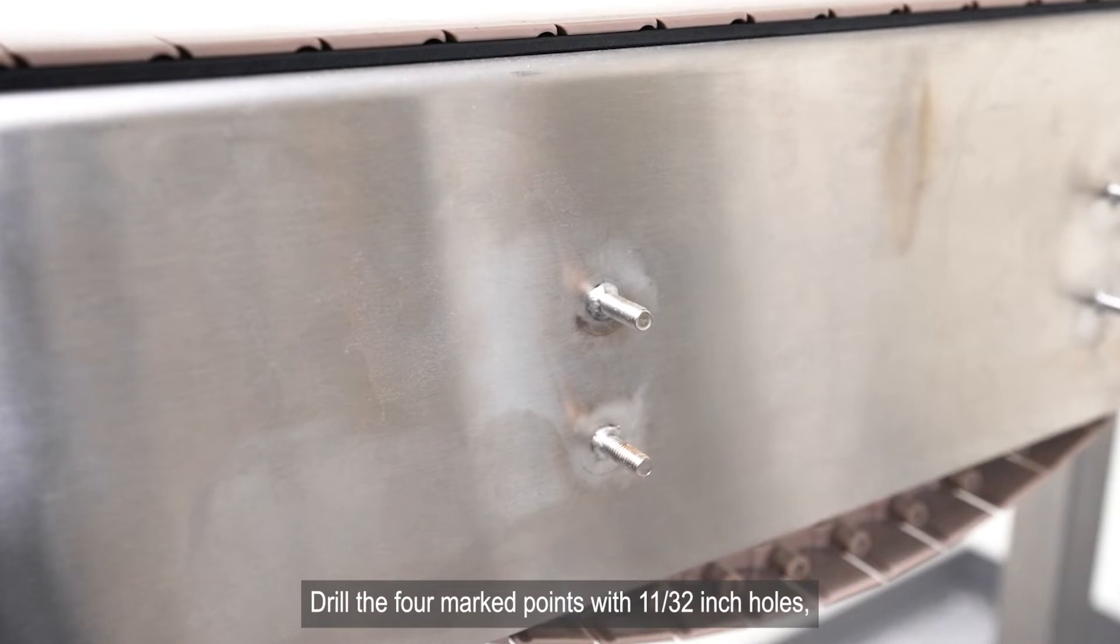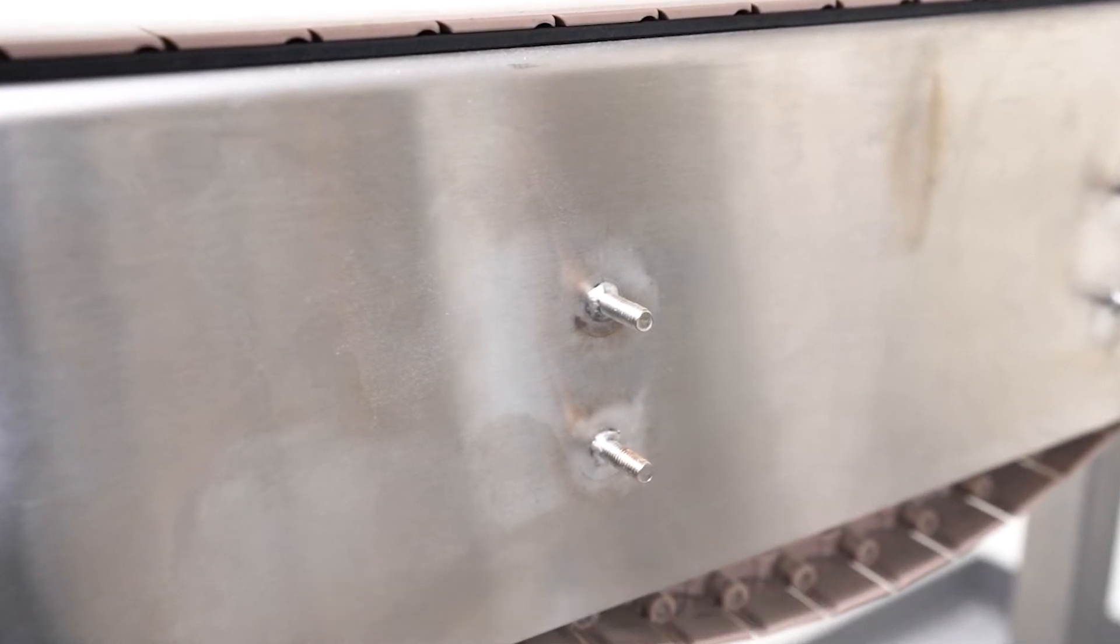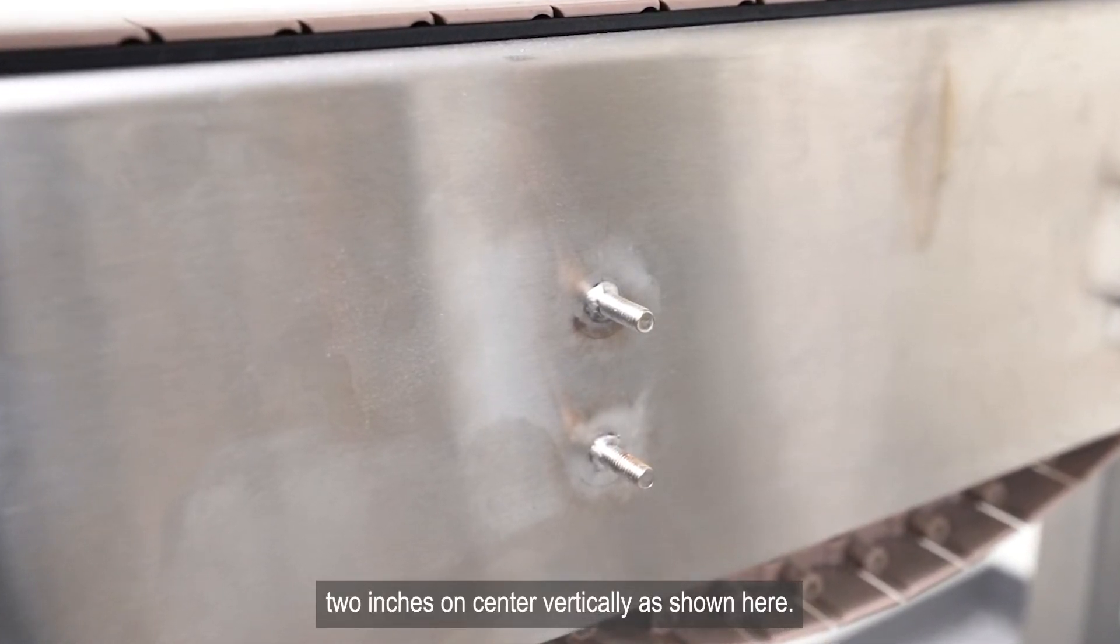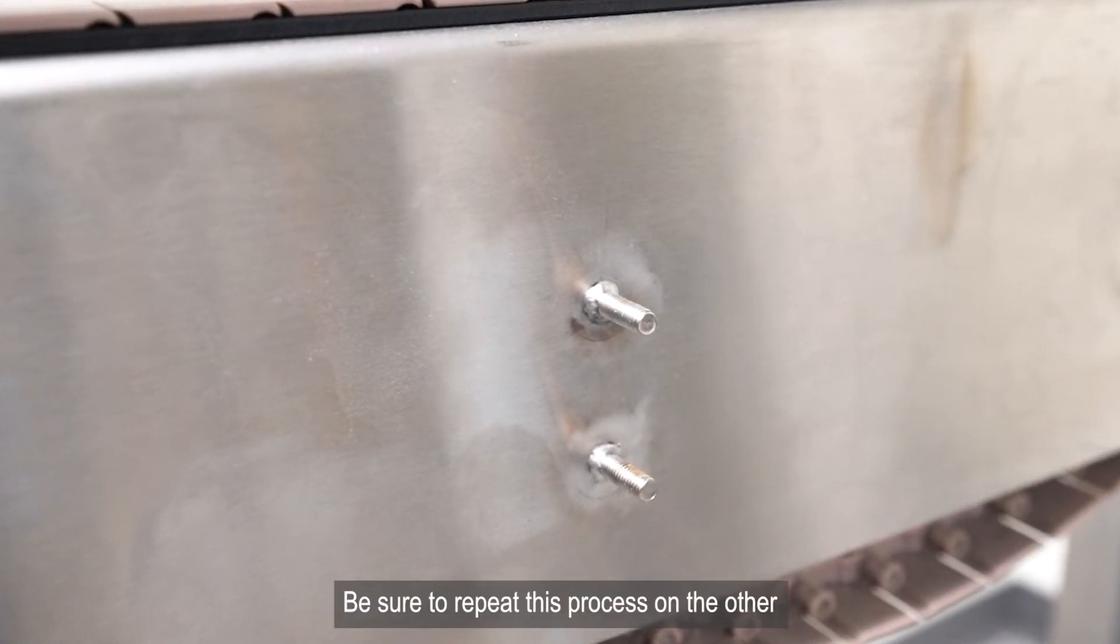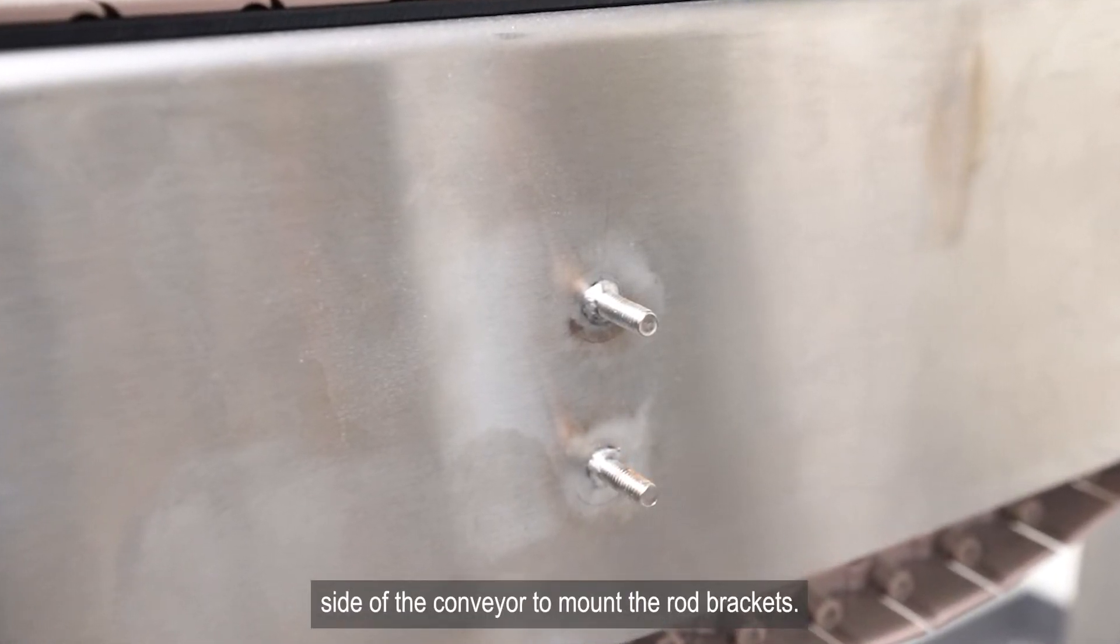Drill the four marked points with 11 32-inch holes, 2 inches on center vertically, as shown here. Be sure to repeat this process on the other side of the conveyor to mount the rod brackets.